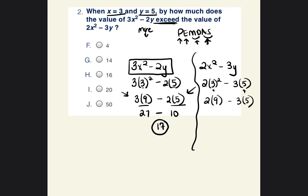We did the exponent; now we multiply or divide. 2 times 9 is 18. 3 times 5 is 15. Bring down the subtraction sign. Now that we've multiplied, we can add or subtract. So we found what 3x squared minus 2y equals and what 2x squared minus 3y equals when x equals 3 and y equals 5.